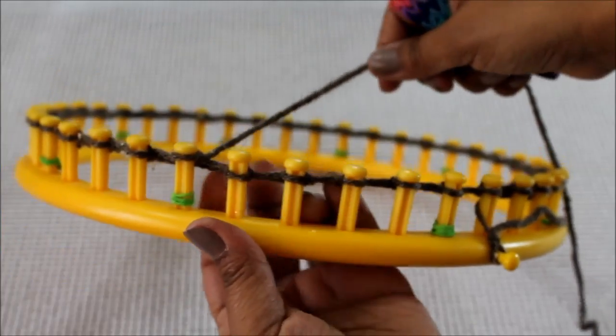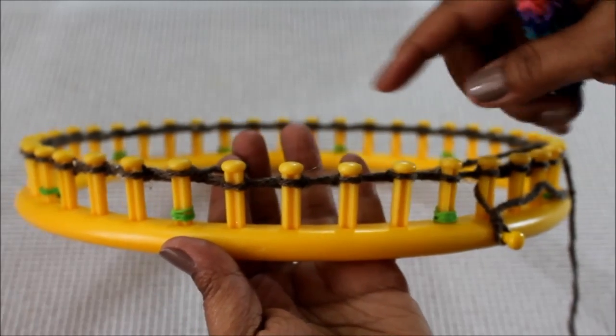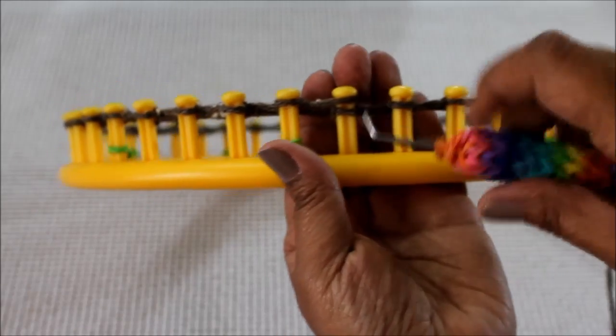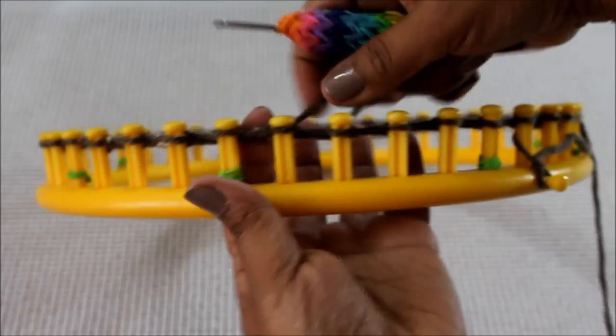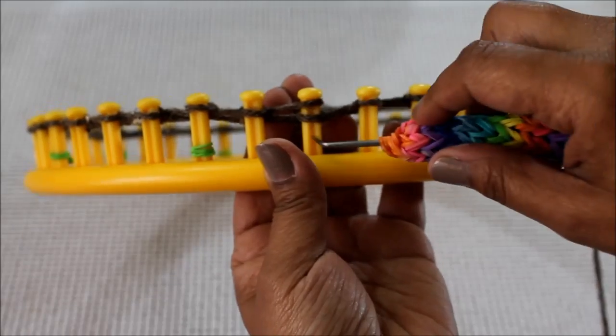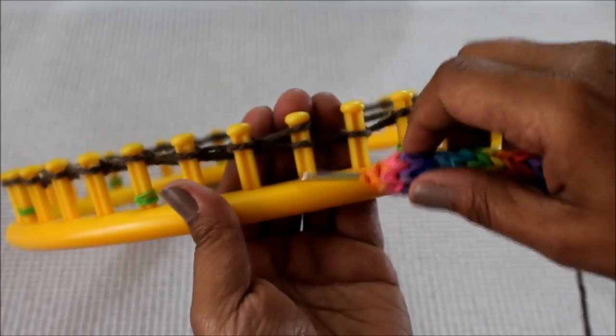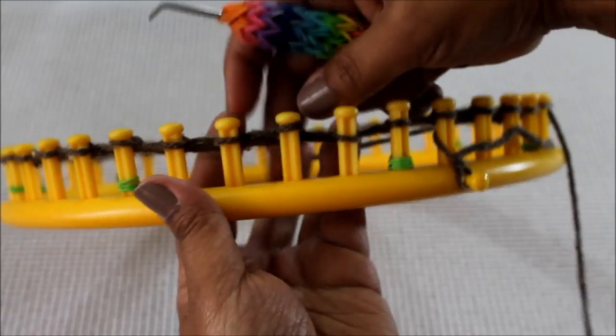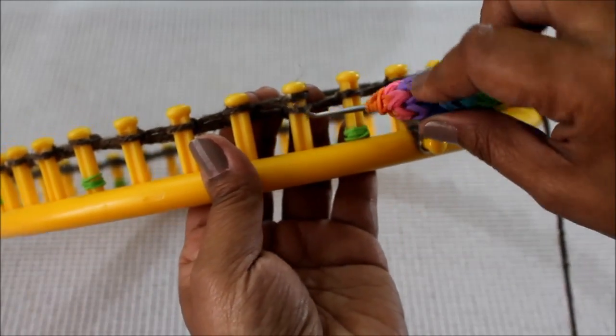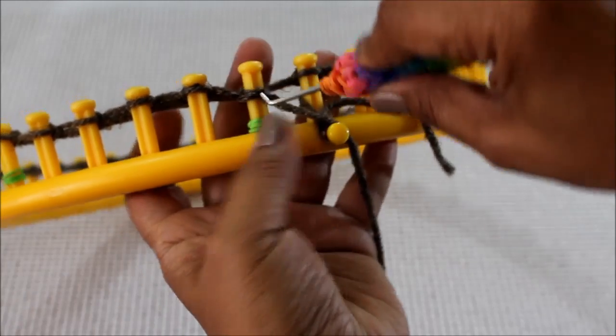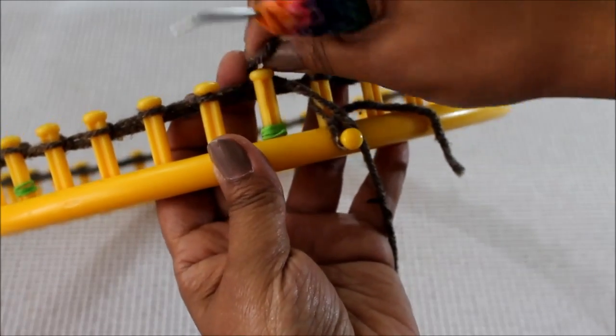So say you're using this 41 peg loom, you're going to have one, two, three, four knits at the end of your row. So this is the end of row one, but it's going to be the same for all of your rows. If you have a 40 peg loom, then you're not going to have this extra knit. If you have a different kind of loom, just make extra knits or extra purls. It's not going to make a big deal.